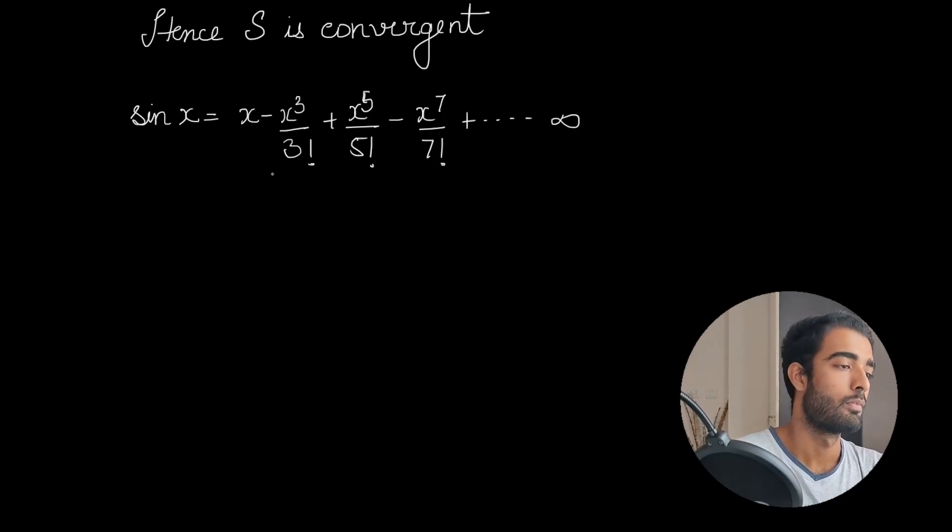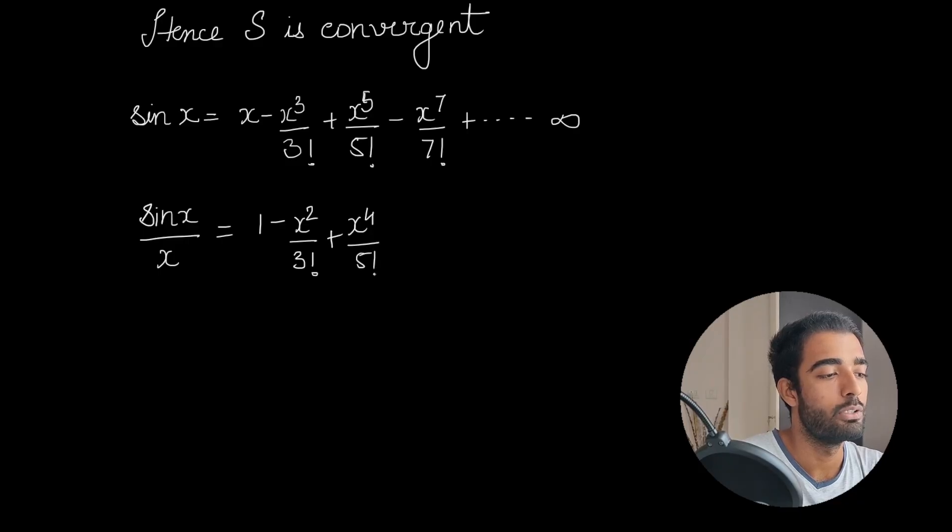Now we are going to look at the Taylor series of sin x, which can be written as x - x³/3! + x⁵/5! - x⁷/7! and so on. We can see that the left-hand side is sin x / x and x cannot be 0 here, and the right-hand side is the polynomial.